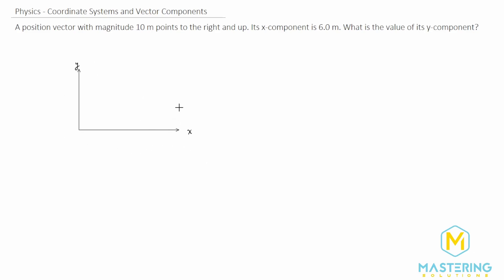So I drew a coordinate grid here for us. We're going to start right at the origin, and they say it goes up and to the right 10 meters. We have 10 meters for the vector, and they say that the x component of it is 6 meters. So if we draw the x component right here, they say that is 6 meters.